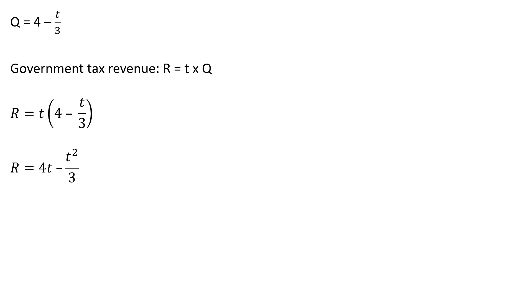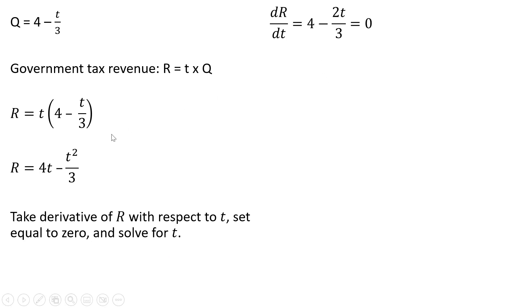Now we're ready to maximize. We're going to take the derivative of this expression with respect to t, set that derivative equal to 0, and then solve for t. The derivative of 4t is 4. The derivative of minus t squared divided by 3 is minus 2t divided by 3, and we're setting that result equal to 0. We're maximizing. Moving some things around, 3 times 4 gives us 12, and then dividing through by 2. The per-unit tax that maximizes government total tax revenue is $6 per unit.